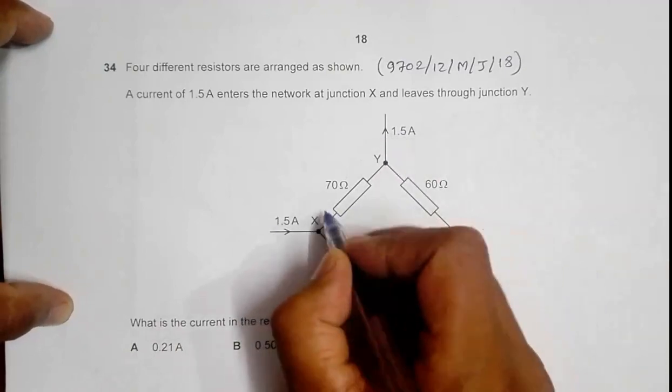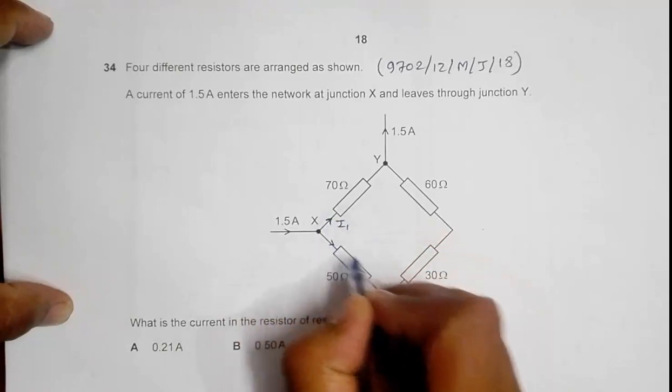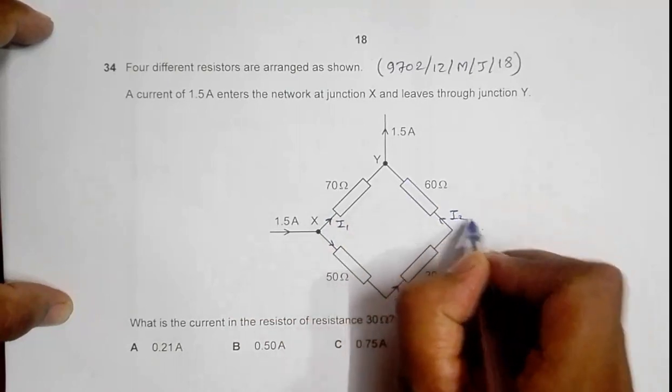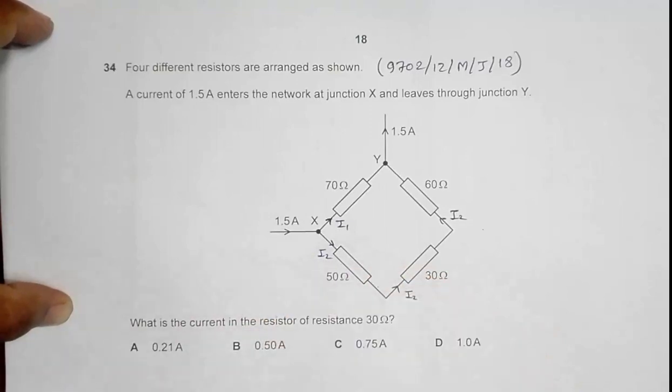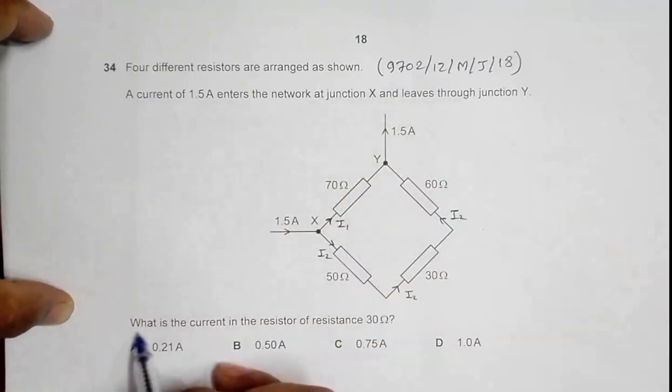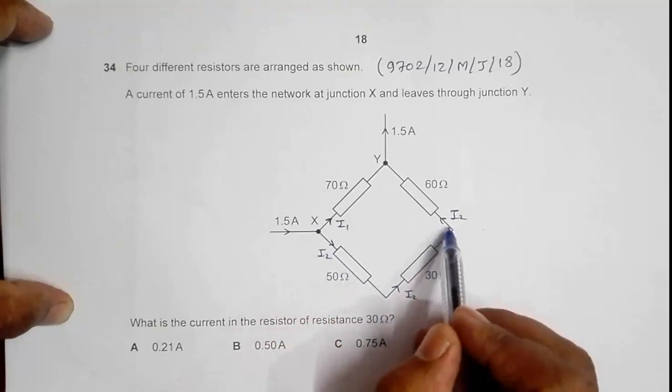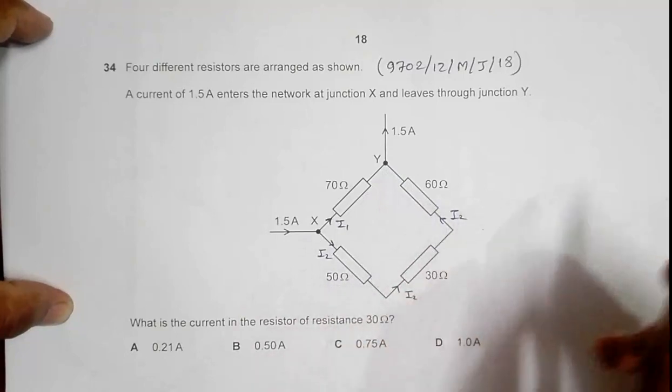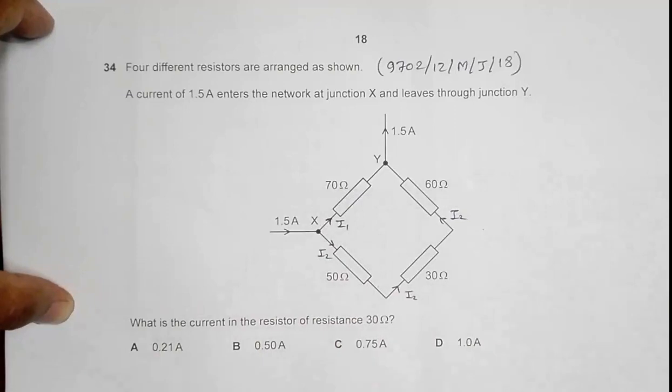That means the current here is, let's say, equal to I1, and that current here should be I2. We have to find what is the current in the resistor of resistance 30 ohm. So we have to find the value of I2. The current through 30 ohm, 50 ohm, and 60 ohm are all the same, whereas the current through the 70 ohm could be different.